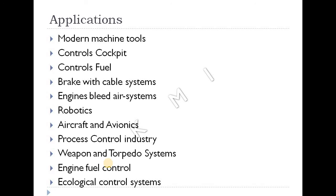Applications of RVDT include robotics, aircraft and aircraft cockpit systems, process control industries, weapon and torpedo systems, modern machine tools, engine fuel controls, and ecological control systems. That describes the RVDT and its applications.